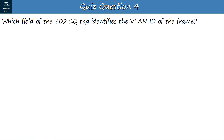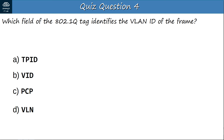Question 4: Which field of the 802.1Q tag identifies the VLAN ID of the frame? A: TPID. B: VID. C: TCI. D: VLN. The answer is B — VID, which stands for VLAN ID. It is 12 bits long and identifies the VLAN number. TPID stands for Tagged Protocol Identifier and uses the hexadecimal value 8100 to identify dot1Q tagged frames. PCP stands for Priority Code Point and is used for class of service. VLN is not a real field of the 802.1Q tag.